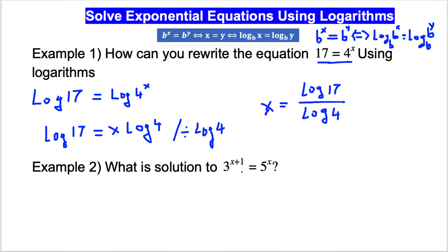Now, what is the solution of 3 to the exponent (x+1) equals 5 to the x? We can use common log or natural log. Since I used common log in the previous example, let's use natural log here. So: ln of 3 to the exponent (x+1) equals ln of 5 to the exponent x. Whatever log you use on one side, you must use the same on the other side — this is the most important thing.